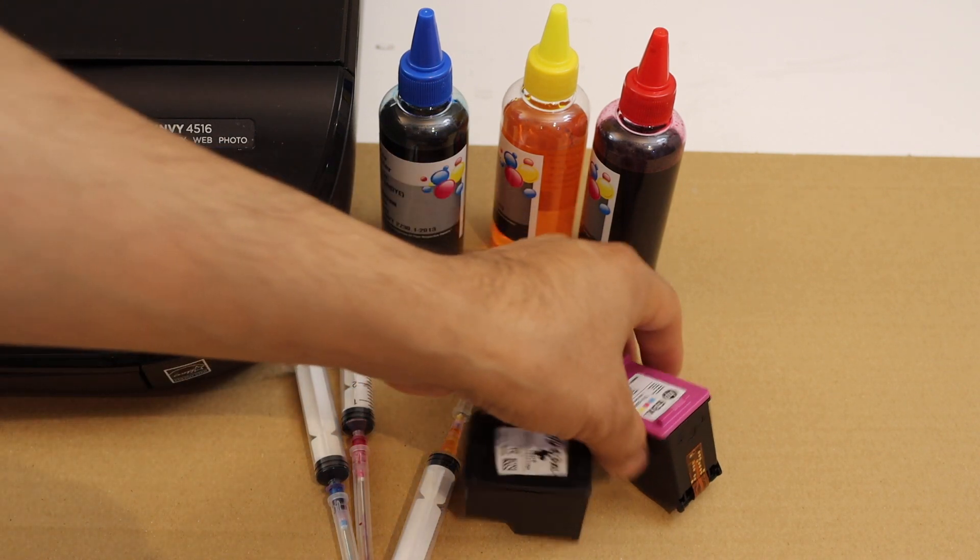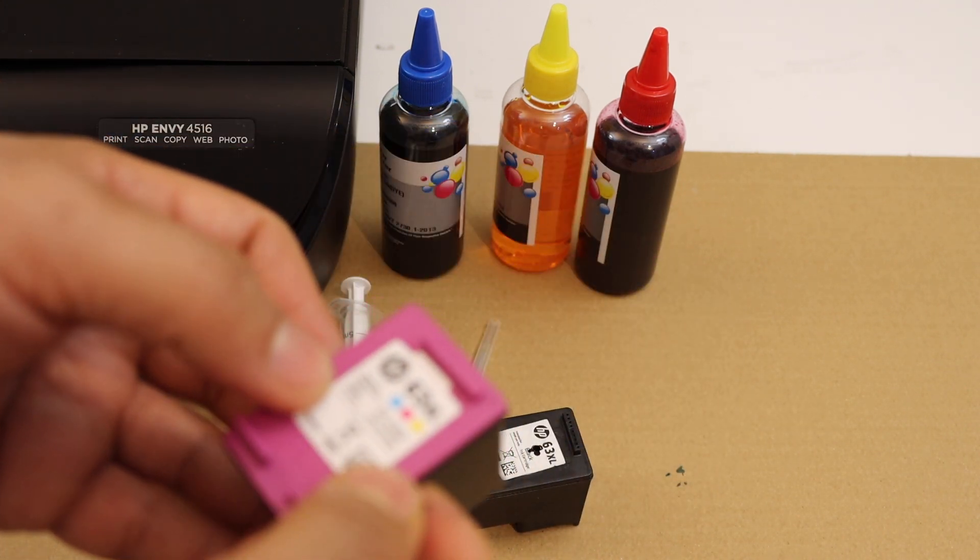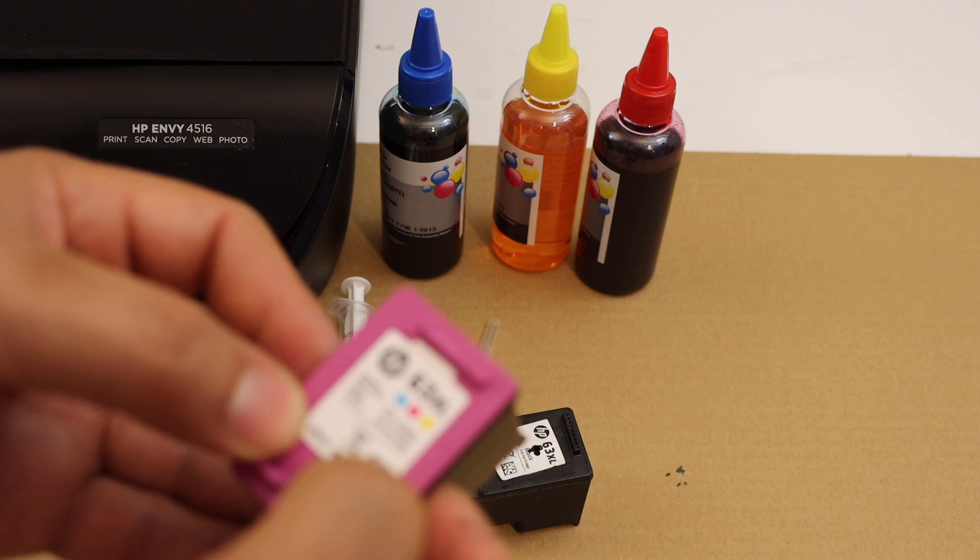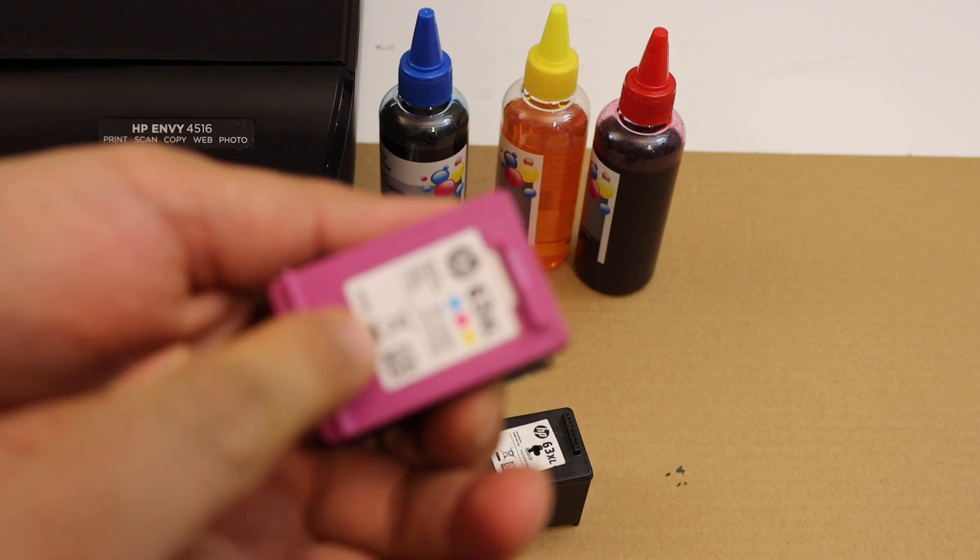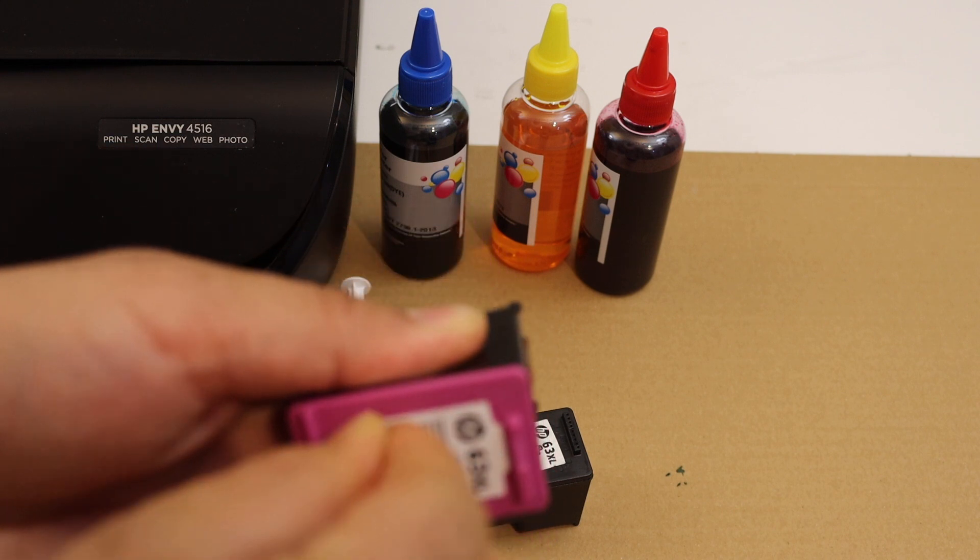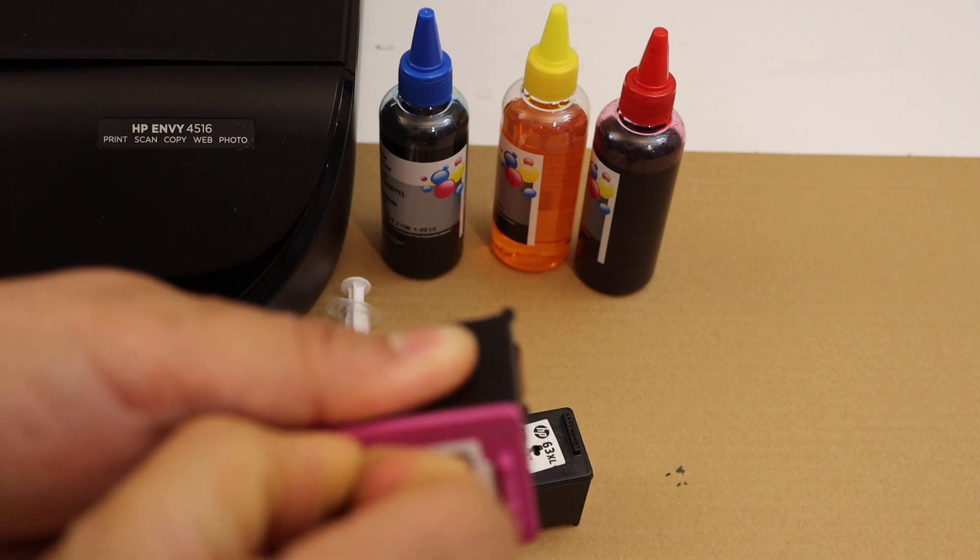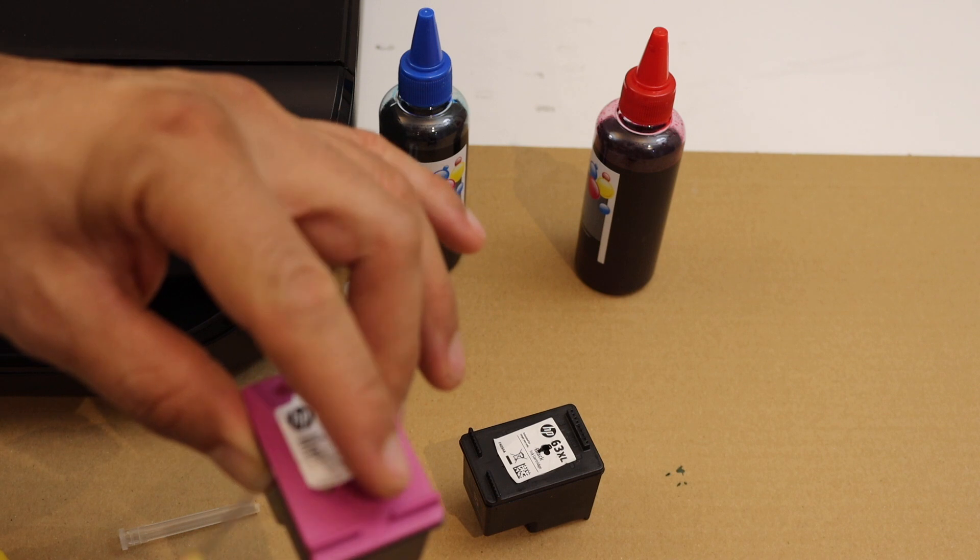Now the next is color ink cartridge. Again there are 3 holes here. One is here, one is here and one on the top. We can remove the sticker to double check and make sure we put it in the right section. We can do 2 ml in each section.